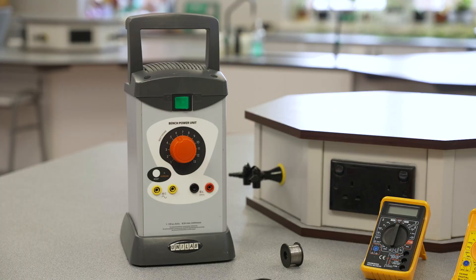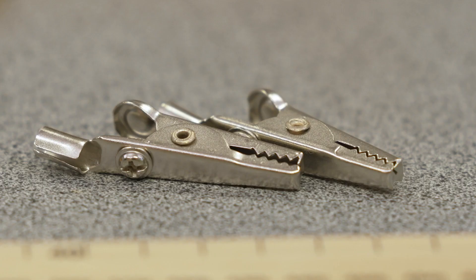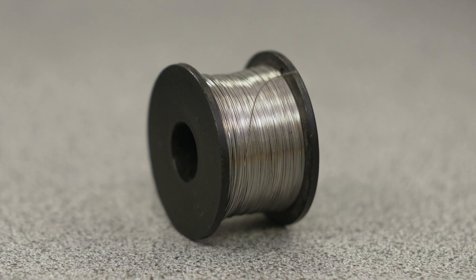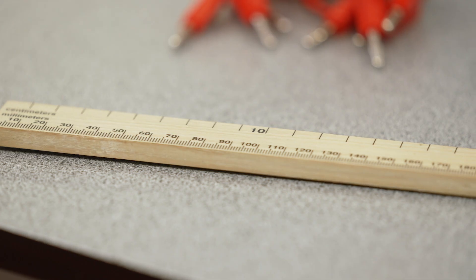A bench power supply - in this case we're using the bench power unit by Unilab which is a general purpose 13 volt power supply - 4mm connecting leads, crocodile clips, constantan wire, multimeters (alternatively you can use a digital voltmeter and ammeter), BEK resistors and a meter rule.